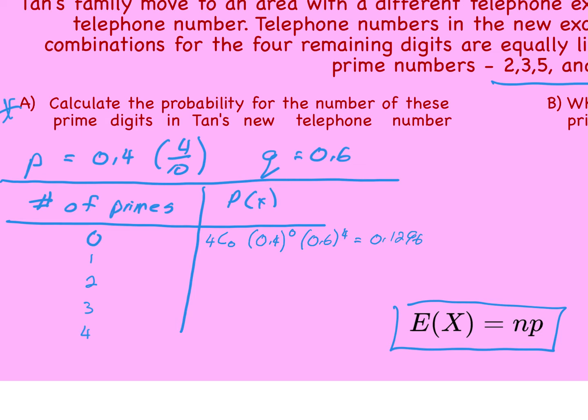I'll just do a few of these. I won't do them all. So 4 choose 1, if he's getting 1 prime, and you'll notice the exponents now change. We have 1 and 3, and those two exponents have to add up to 4. So that calculation becomes 0.3456.